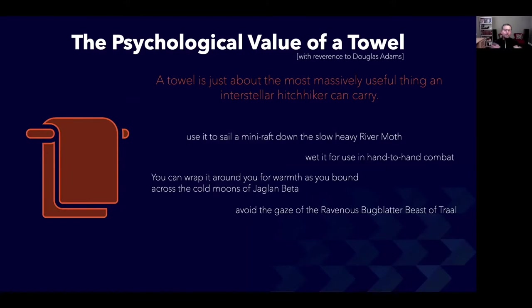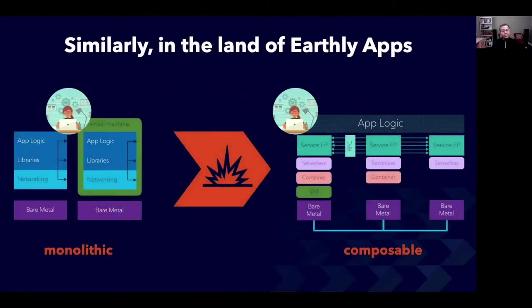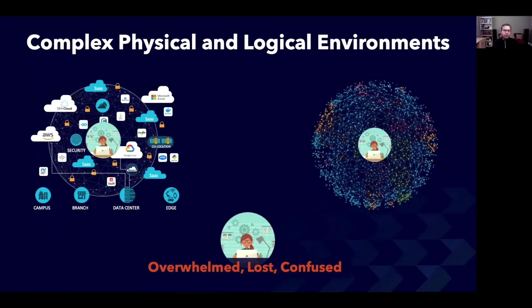It can do all of these wonderful things and help him in so many situations that you see here. Now let's focus your attention to our world of earthly apps. Our monolithic application viewpoint on the left, whether it be bare metal-based or VM-based, is similarly being blown apart in favor of a composable, large-scale distributed application. In this new world of modern distributed apps, the physical picture on the left is definitely convoluted, but the logical dependency graph shown on the right of APIs, services, and RPC calls is even more convoluted, leaving our developer overwhelmed, lost, and confused, like Arthur Dent was after planet Earth was blown apart.